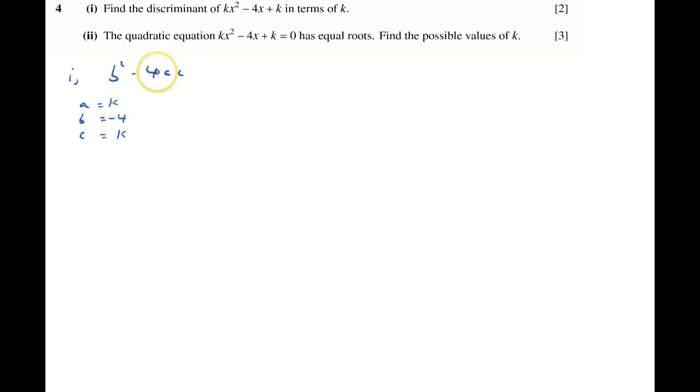And so b squared - 4 times minus 4 is 16 - 4 times a, which is k, times c, which is k. So the discriminant is 16 minus 4k squared.